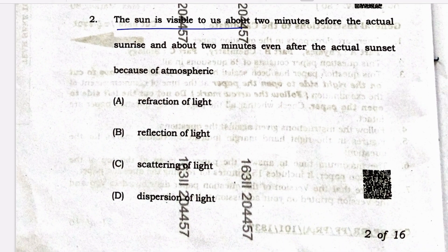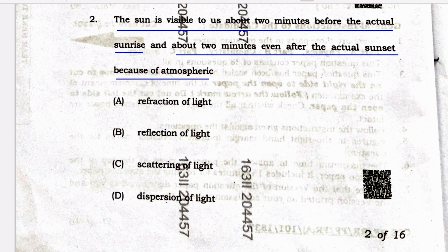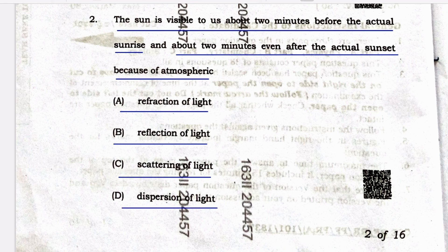The Sun is visible to us about two minutes before the actual sunrise and about two minutes even after the actual sunset because of atmospheric — option A: refraction of light, option B: reflection of light, option C: scattering of light, and option D: dispersion of light. The correct answer is option A, refraction of light.